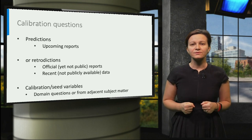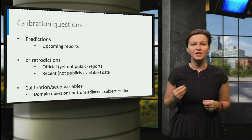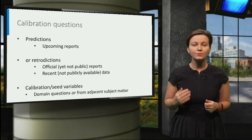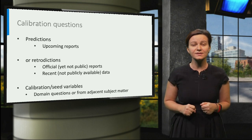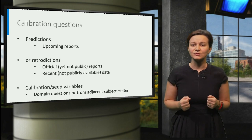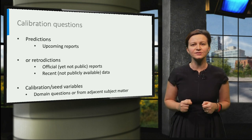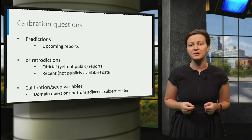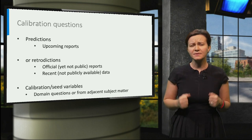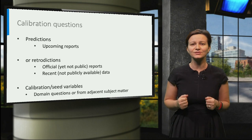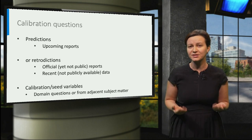Usually, data coming from official reports or data which are not publicly available are used for the calibration questions. The ideal scenario is when the answers to the calibration questions are known soon after the elicitation. For example, suppose the annual report with statistics of high interest for the study is known to be released in September. Planning the elicitation a couple of months earlier would then be ideal. In this case, the data are referred to as predictions.